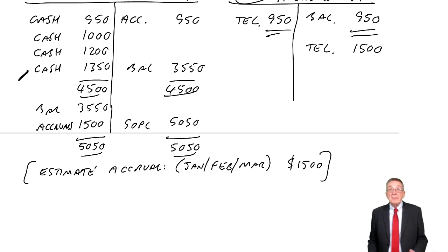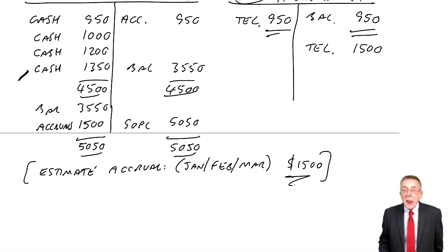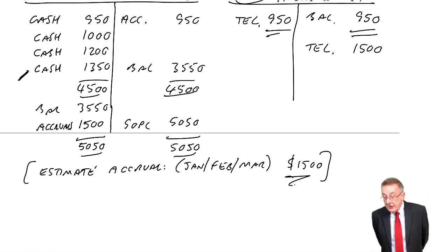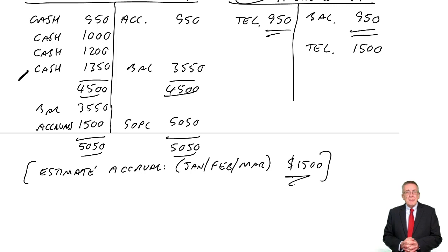The second and final thing, which I kept saying I'd come back to, was this estimate of the accrual. Clearly here, since it said last year we estimated 950, this year 1500, we use whatever we're told. But I wonder where that figure comes from, in real life, how do you know?